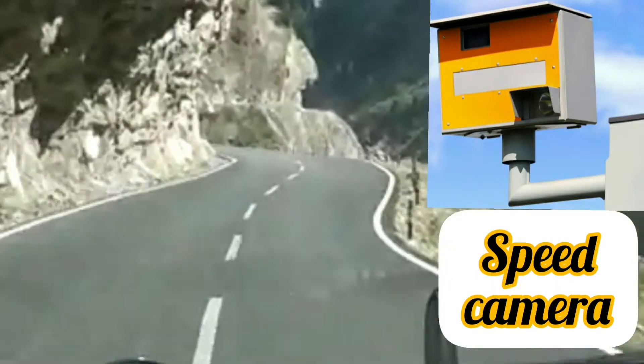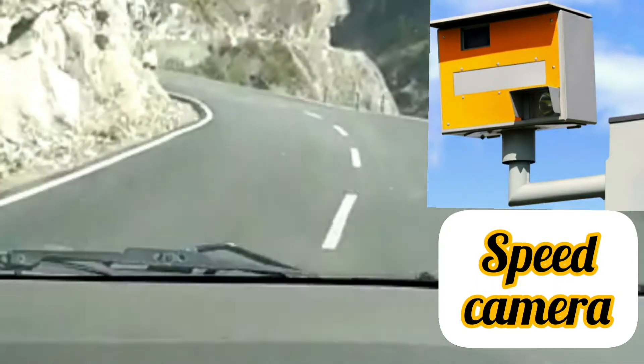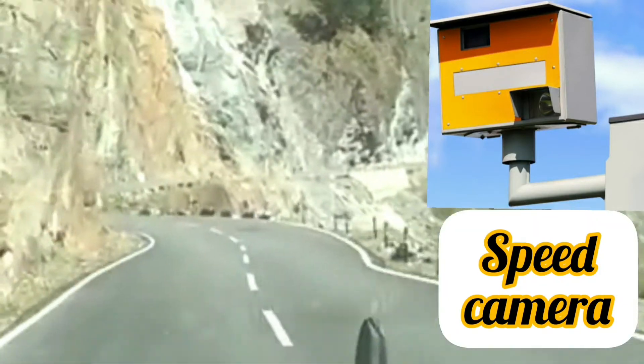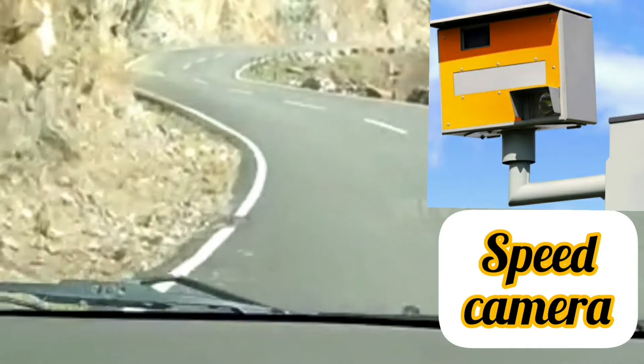This is a speed camera. Speed camera detects any cars or vehicles that are traveling faster than the allowed speed and photographs them.